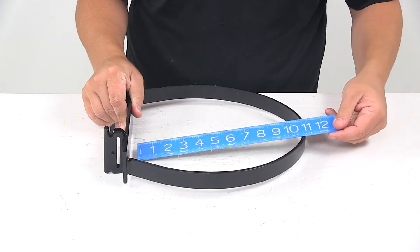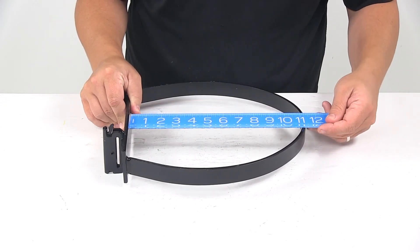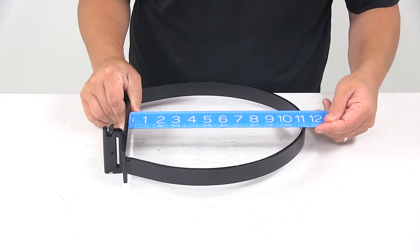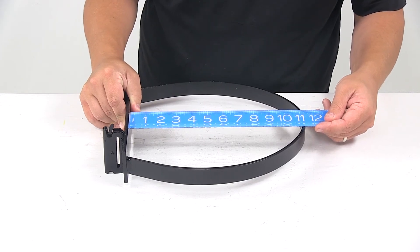Inside edge to inside edge, going this direction, gives a measurement of about 11 and 3 sixteenths.